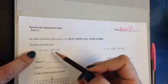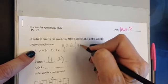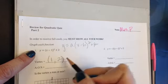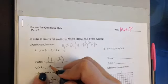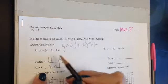identifying the vertex being positive 1, comma 2. This is from A times X minus H, the quantity squared plus K. I'm grabbing the 1 and the 2 here. The axis of symmetry is going to be the equation X equals 1. I get that value from my vertex.